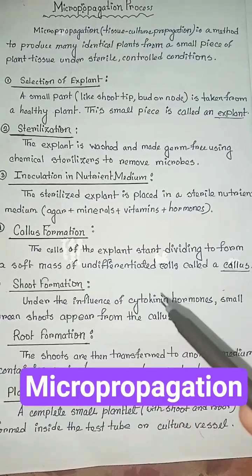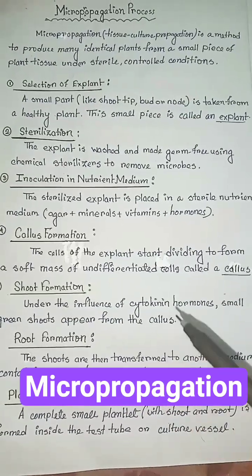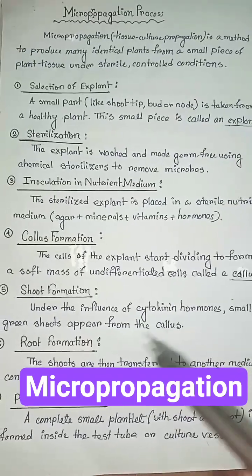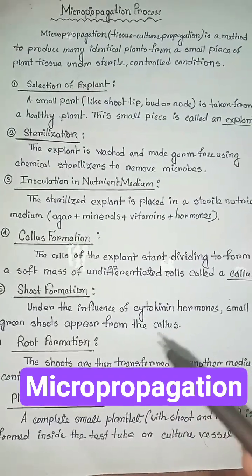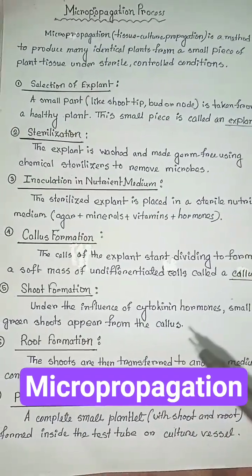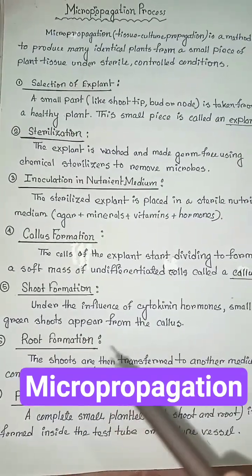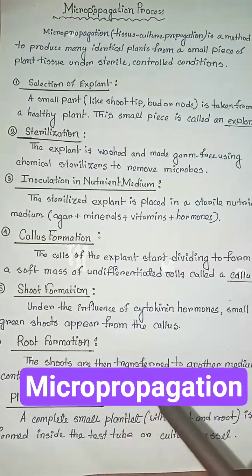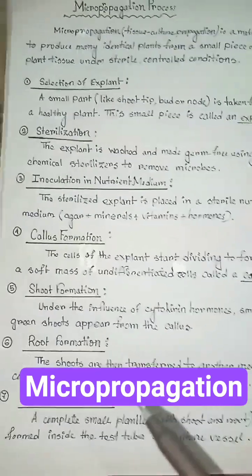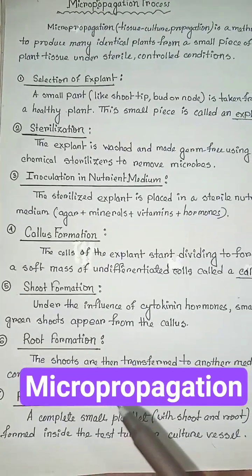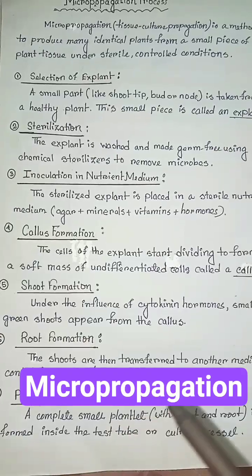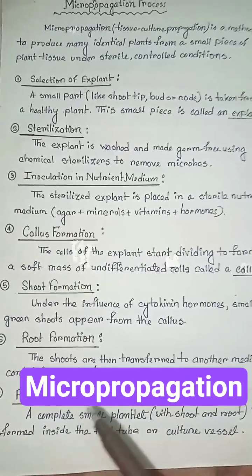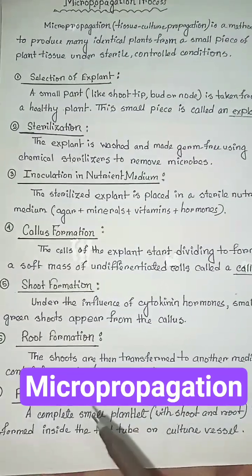Next: shoot formation. Under the influence of cytokinin hormones, small green shoots appear from the callus. Next step: root formation. The shoots are then transferred to another medium containing auxin hormones, where roots develop.